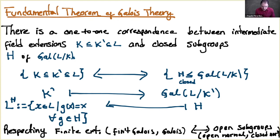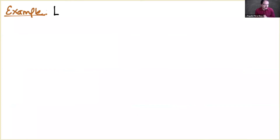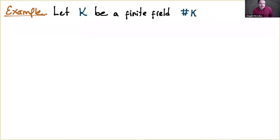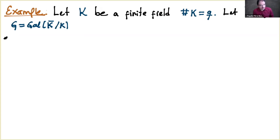Let's consider a very particular example. Let K = 𝔽_q be a finite field with q elements, where q is a power of a prime number. We fix an algebraic closure of K and consider the absolute Galois group Gal(K̄/K). We have a tool to understand it: it is a projective limit. For every n, there is a unique finite extension of degree n of K, namely 𝔽_{q^n}.